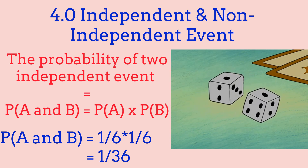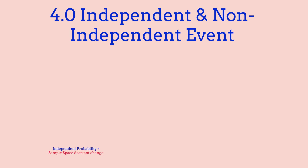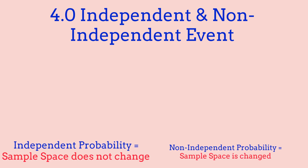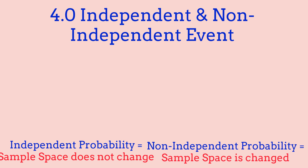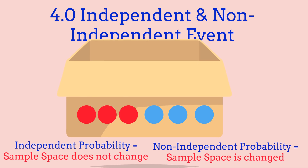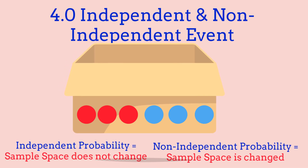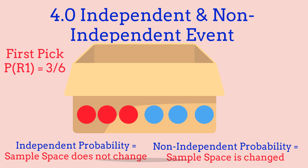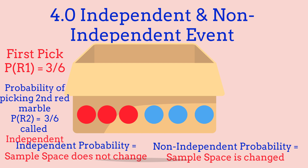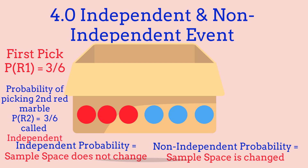Independent probability does not affect our sample space, while non-independent probability does affect our sample space. For example, if we have a box with 6 marbles — 3 red and 3 blue — the probability of picking a red marble is 3 out of 6. Now, if we take one red marble out and put it back in, our probability still hasn't changed because it's still 3 out of 6.